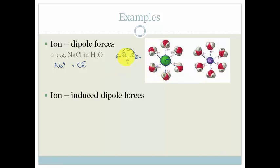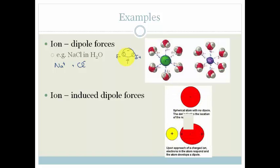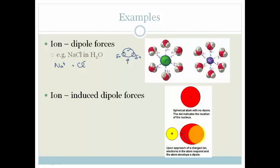An example of an ion-induced dipole force: you have a spherical neutral atom with no dipole, and a big positive cation comes close. The cation attracts the electrons to the near side, making that side slightly negative and the far side slightly positive because the electrons have moved over. This is an ion-induced dipole — suddenly the neutral atom looks like a dipole.